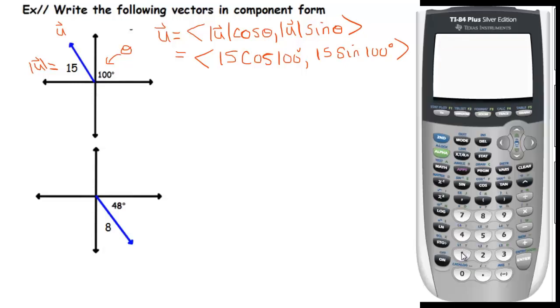So I'll put this in my calculator. 15 cosine of 100, I get negative 2.605, and 15 sine of 100 degrees is 14.772.